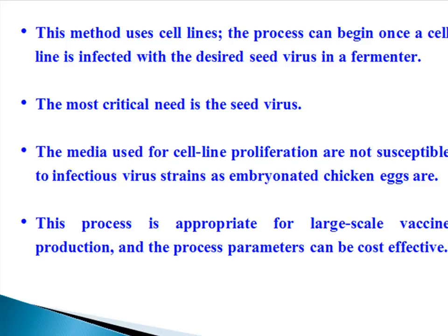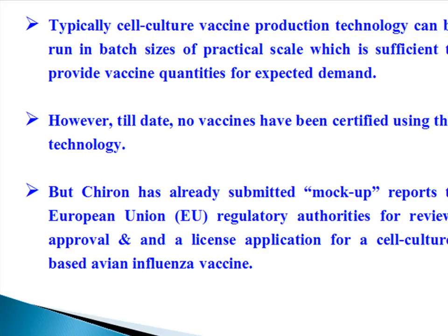This process is appropriate for large-scale vaccine production and the process parameters can be cost effective. Typically, cell culture vaccine production technology can be run in batch sizes of practical scale which is sufficient to provide vaccine quantities for expected demand. However, till date no vaccines have been certified using this technology. But Chiron has already submitted mock-up reports to European Union regulatory authorities for review, approval, and a license application for a cell culture-based avian influenza vaccine.